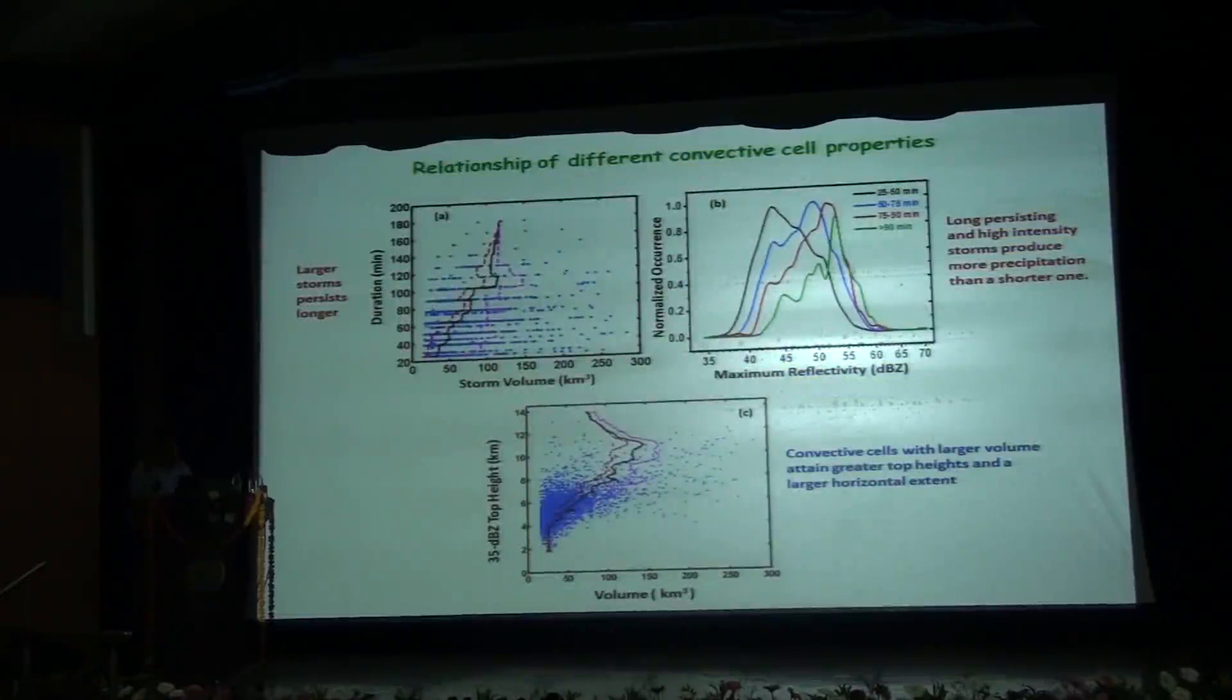We now explore the relationship of different convective cell properties. First figure shows the variation of the storm duration with the storm volume. The black line shows the mean of the distribution. The red line shows the 5th percentile. The pink line shows the 95th percentile. So larger storms with higher storm volume persist for longer duration. Then we see the normalized distribution of storms of different duration with respect to maximum reflectivity. So we see a progressive shift of storms of higher duration to larger reflectivity values. That is, the long-persisting storms which are of higher intensity may produce more precipitation than the shorter-lived ones. The third figure shows the variation of the 35 dBZ storm top heights with respect to volume. So the convective cells with larger volumes up to 150 cubic kilometers attain greater top heights up to 4 to 9 kilometers and have a larger horizontal extent.